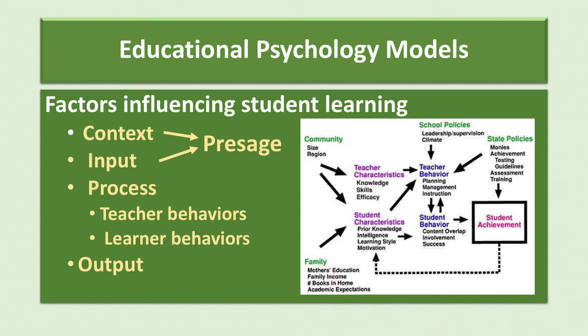This is another model showing how the context factors related to the community, school and state policies, and the family influence the types of teachers that are hired and important student characteristics. The teacher characteristics, state and school policies, then have an impact on teacher-classroom behavior. This, along with student characteristics, influences student behavior, and then student behavior impacts teacher behavior as a reciprocal relationship is established. Finally, state policies related to measures of learning achievement and student behavior impact learning achievement measures outside of the classroom. Student achievement at the end of the learning experience then provides the student characteristics for the next learning experience.